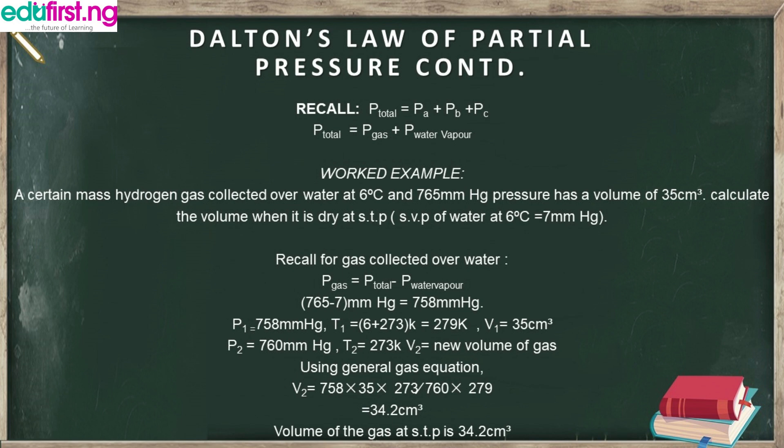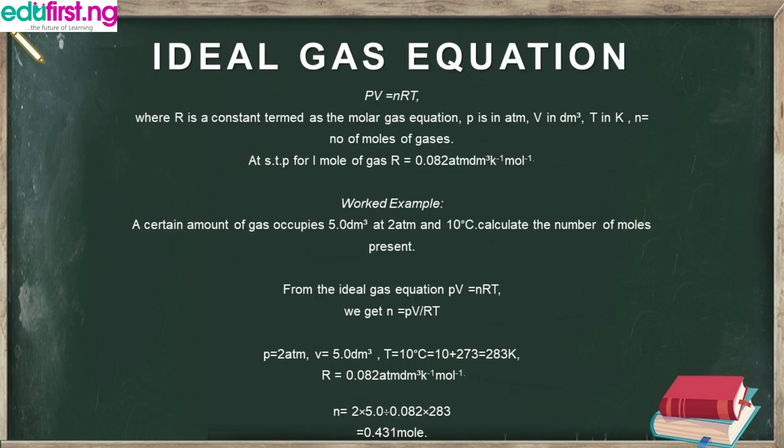That's easy — go over it again and it's very straightforward. Now we move to the Ideal Gas Equation. The Ideal Gas Equation is PV equals nRT, where R is a constant termed the molar gas constant. Here, P is in atmospheres — another unit for measuring pressure.